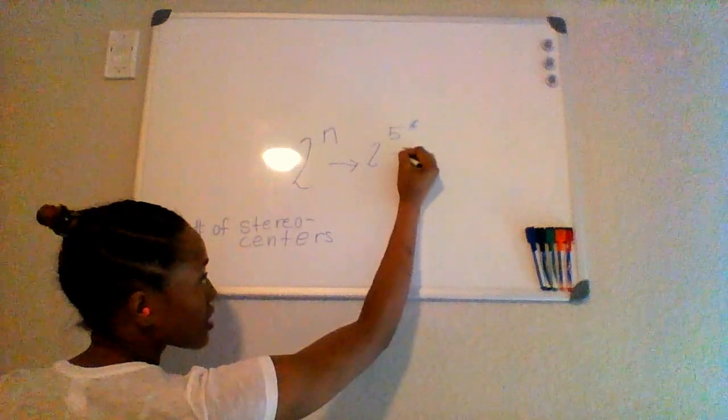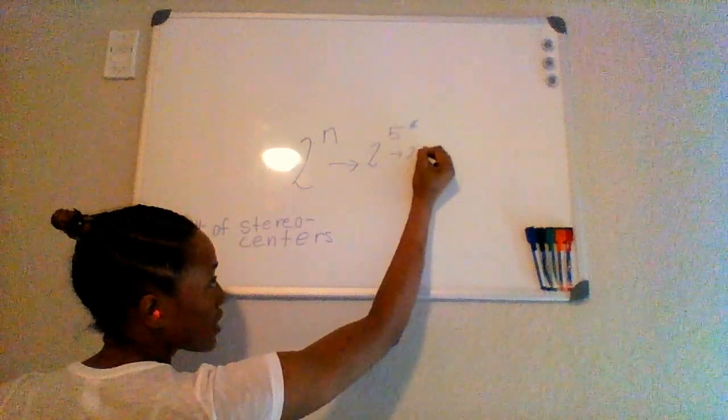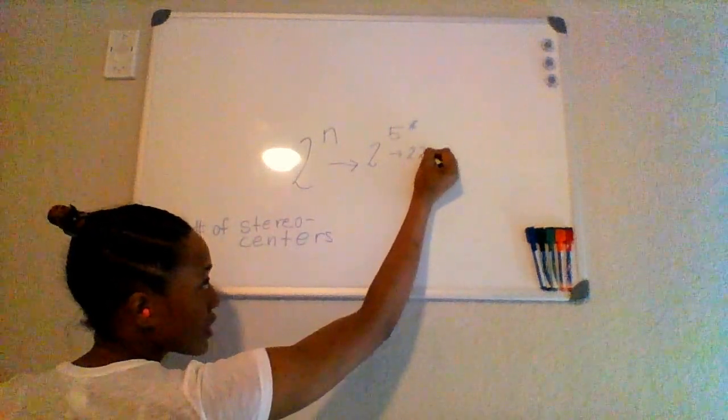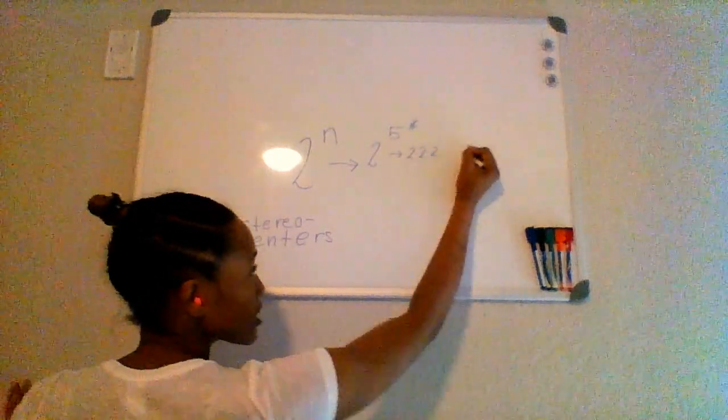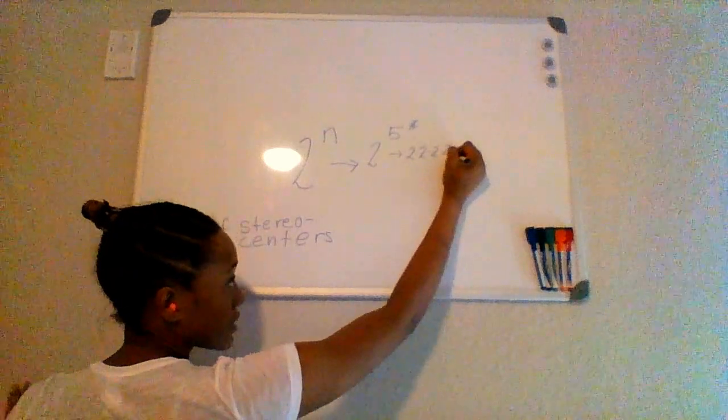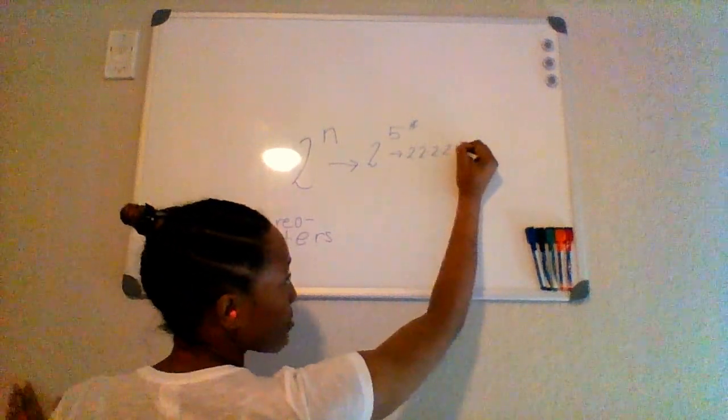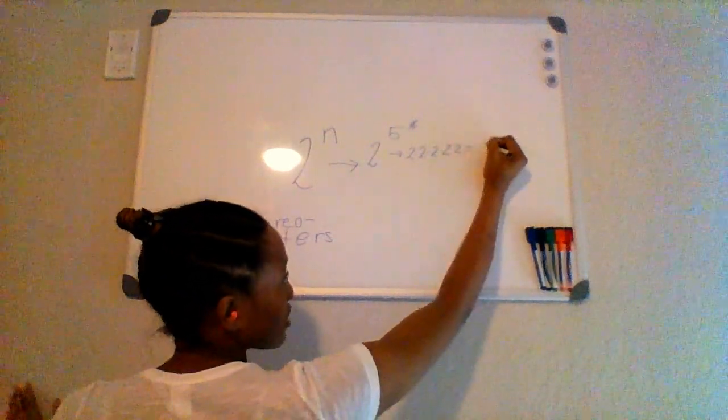And so that's equivalent to 2 times 2, which is 4, times another 2, which is equivalent to 8, times another 2, which is equivalent to 16, and multiply it by one more 2, which is equivalent to 32.